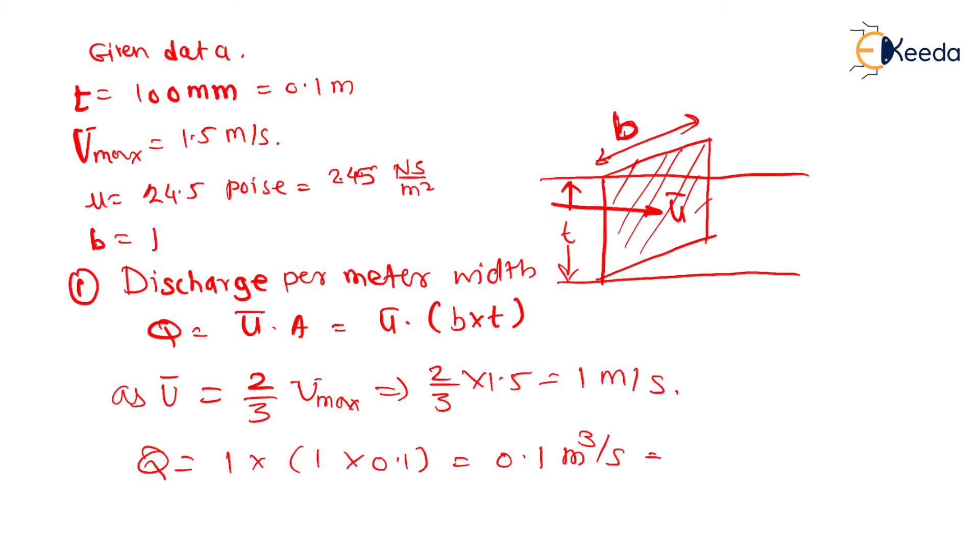So, we can calculate discharge Q as 1 × 1 × 0.1 equal to 0.1 meter cube per second. In simplified units it becomes by multiplying 1000 it becomes 100 liter per second. If we logically think about this term. In one second, 100 liters of fluid is flowing through a particular cross section.